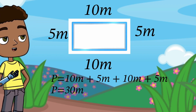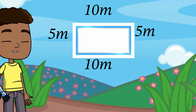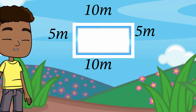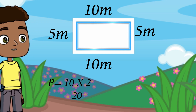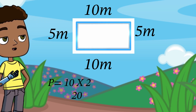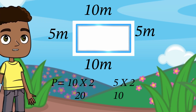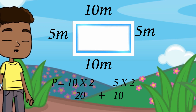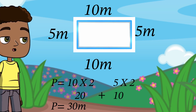Let's calculate the perimeter using multiplication. We have two sides measuring 10 meters and two sides measuring 5 meters. We can find the perimeter by multiplying 10 by 2, which is 20, and by multiplying 5 by 2, which is 10. 20 plus 10 equals 30. The perimeter is 30 meters.